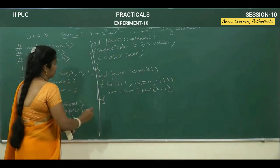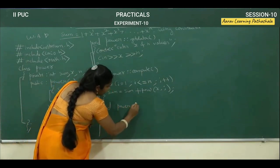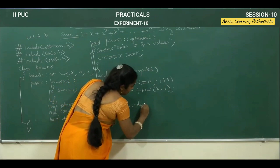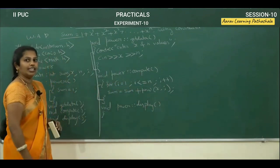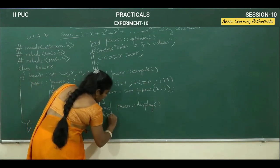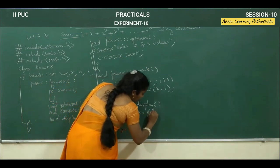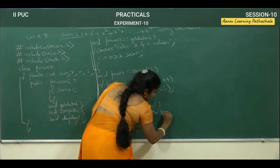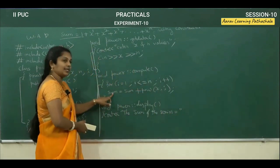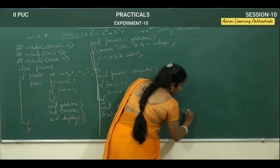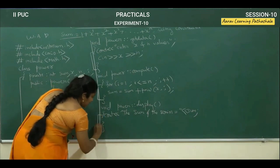Next, we want to write the display function: void power scope resolution operator display. On this display function, we want to display the result. That's why: cout insertion operator — the sum of the series equals — then display the value. Where exactly is the result present? On sum. That's why: insertion operator, sum value we will write. Then close this display function.